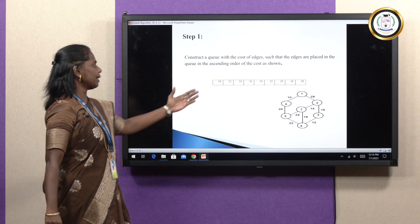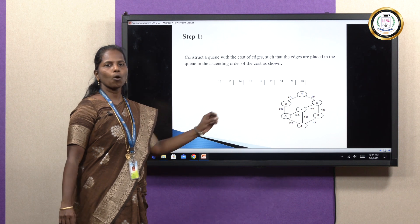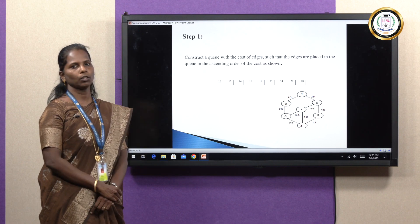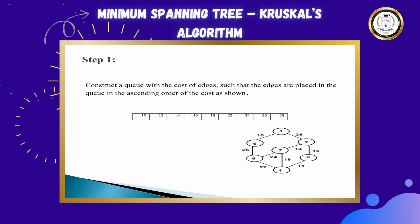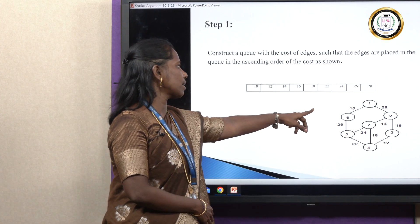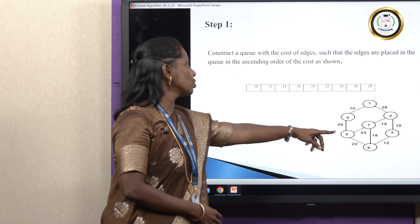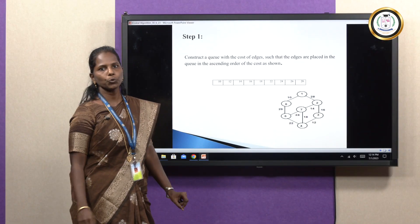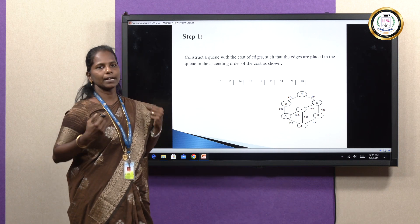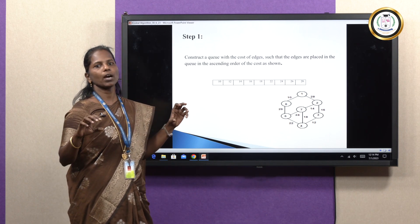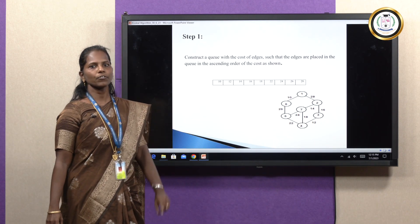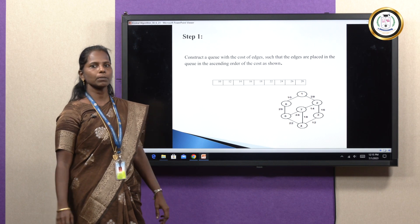Now we will see the steps to construct the minimum spanning tree. The first step is: from the given network, we have to construct a queue Q. The Q should contain all the edge values in ascending order. The edge values are 10, 26, 22, 12, 18, 24. First, identify the edge values, arrange them in ascending order, and place them in your Q data structure. This is the first step to construct the minimum spanning tree.